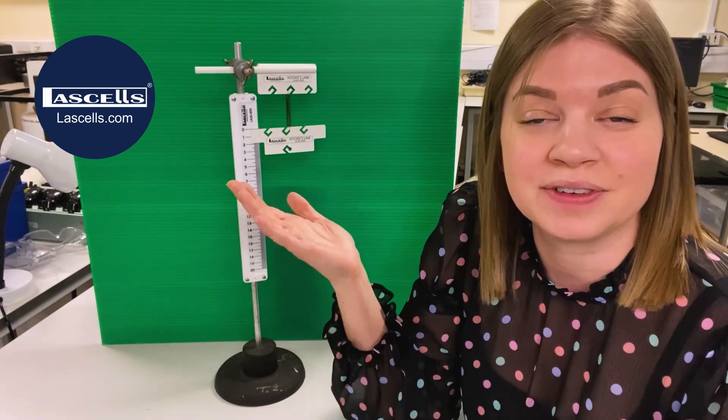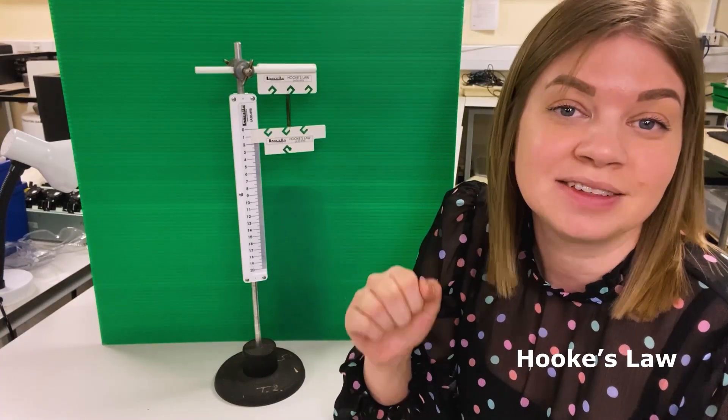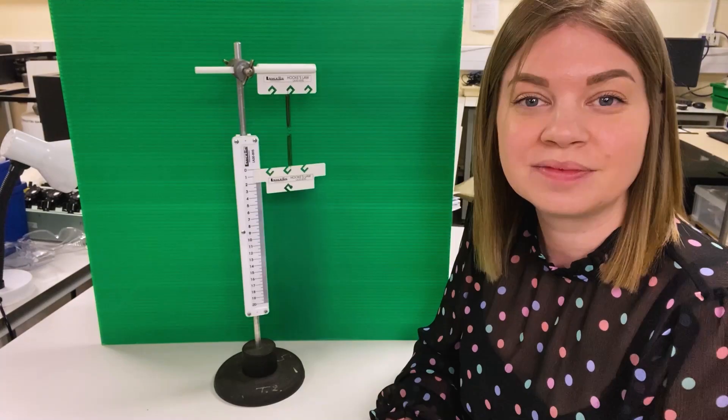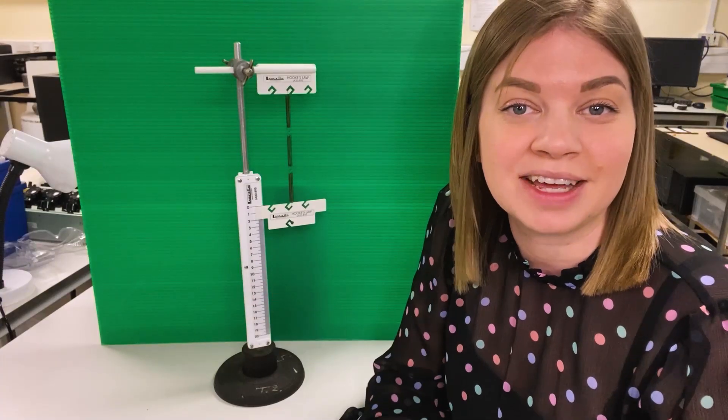On top of looking at the simple case of a single spring, the LaSalle's Hooke's Law apparatus also lets you look at combinations of springs such as two springs in parallel, three springs in parallel, two springs in series, and lastly three springs in series.